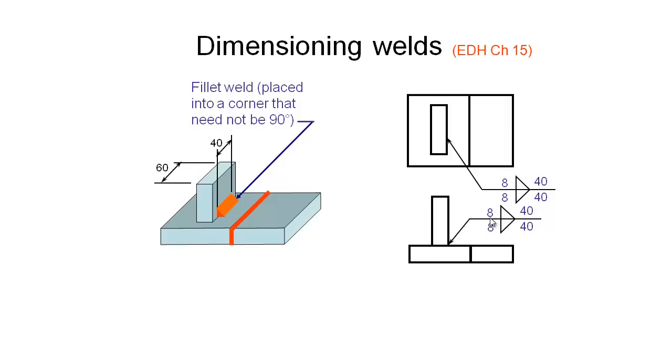We have the dimension first, the type of weld symbolized here with the triangle for the fillet weld, and then the length of each of these welds. This means 8 millimeter fillet weld, 40 millimeters in length. We would assume it is centered on this part if we're not given any other information, and on both sides of this plate.